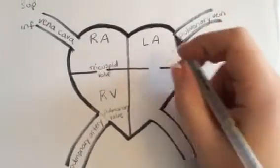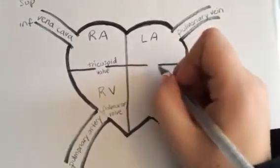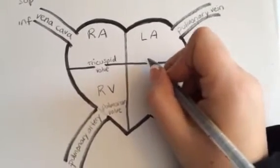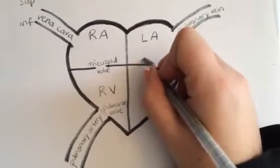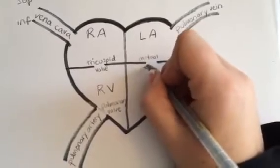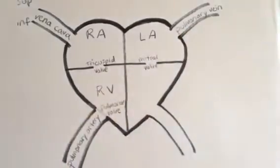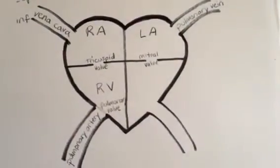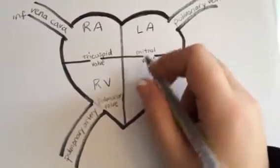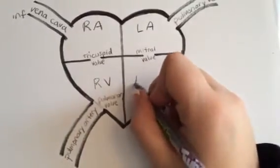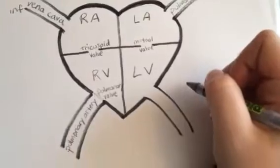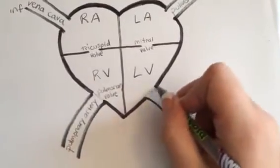From the left atrium, blood travels through another valve called the mitral valve, and goes into the next chamber — the left ventricle.